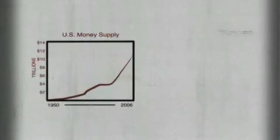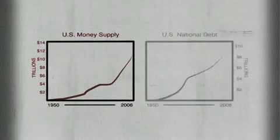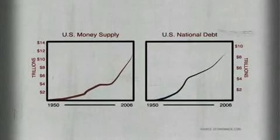If this reality of inherent and perpetual inflation seems absurd and economically self-defeating, hold that thought. For absurdity is an understatement in regard to how our financial system really operates. In our financial system, money is debt, and debt is money. Here is a chart of the U.S. money supply from 1950 to 2006, and here is a chart of the U.S. national debt for the same period. How interesting it is that the trends are virtually the same.